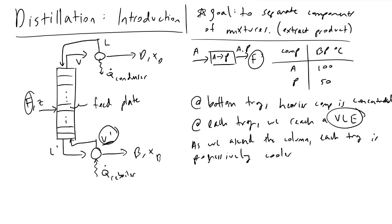Depending on the number of trays, we can get better and better extraction, though we do get diminishing returns. This is modeled in some very important equations, and we can also see this when working with mixtures that have azeotrope compositions.